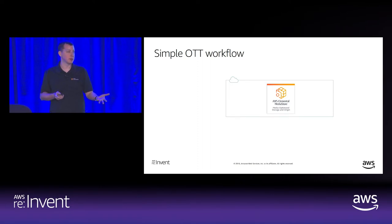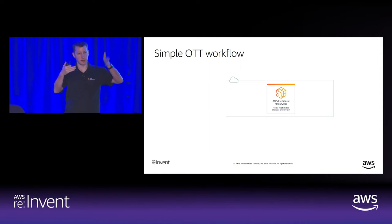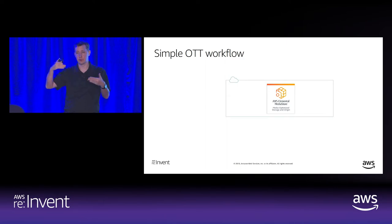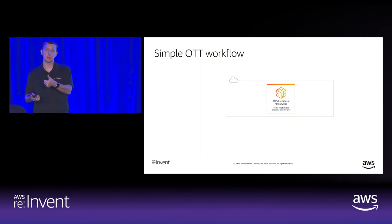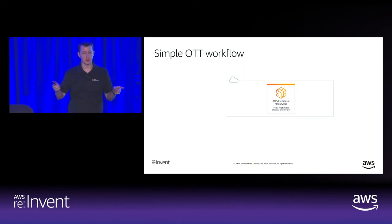The first service worth talking about, laying this out from the middle going outward, is AWS Elemental MediaStore — an origin server. An origin server is basically where your CDN and your encoder meet. Your encoder creates segmented content periodically, every few seconds across multiple bitrates, and puts it in the origin store. Then the CDN, when players request content, comes to that store and asks for it. It's very important that this be extremely low latency, high availability, and very durable.